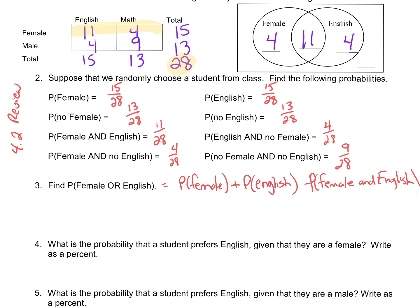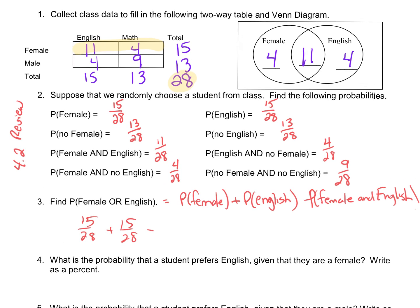So probability of female in this scenario is 15 out of 28. Probability of English is 15 out of 28. And then the double count we've got to subtract is that upper box — that 11 there is female and English. So we've got to subtract 11 over 28. Just doing the numerators: 15 plus 15 is 30. Then 30 minus 11 is 19. So that is our answer: 19/28.